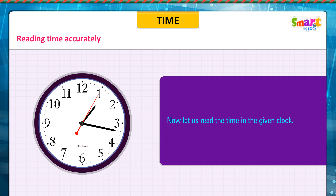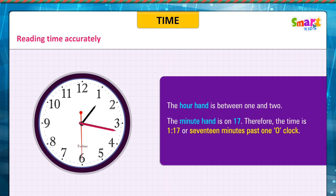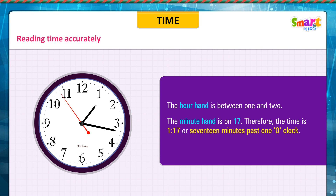Now, let us read the time in the given clock. Look at the clock. The hour hand is between 1 and 2. The minute hand is on 17. Therefore, the time is 1:17, or 17 minutes past 1 o'clock.